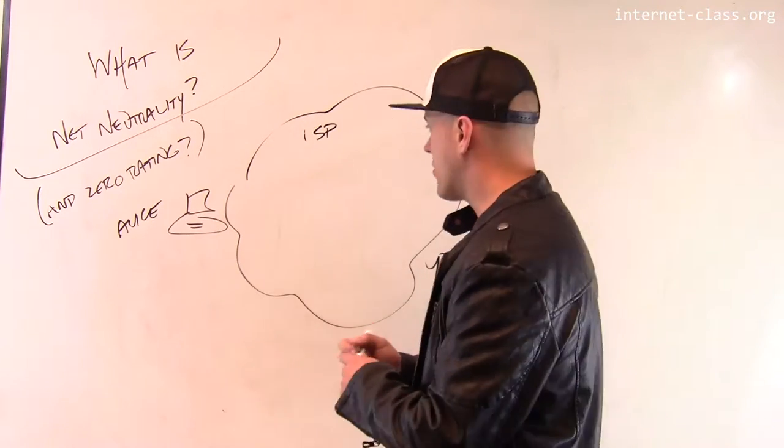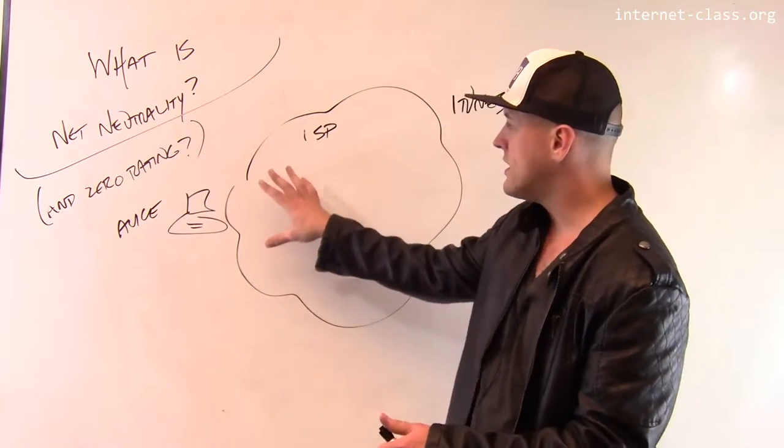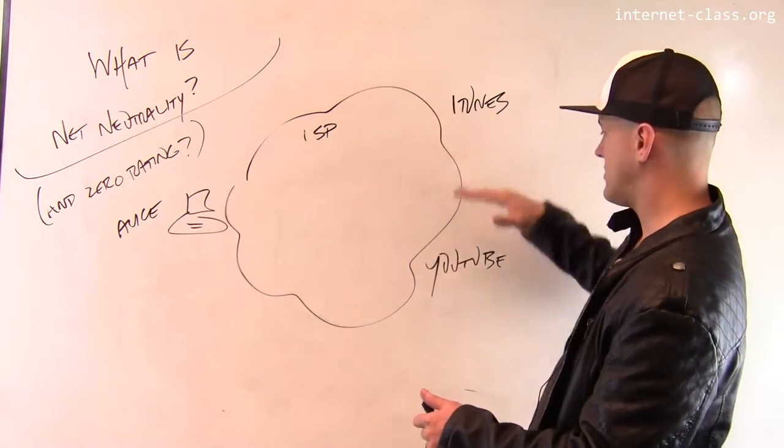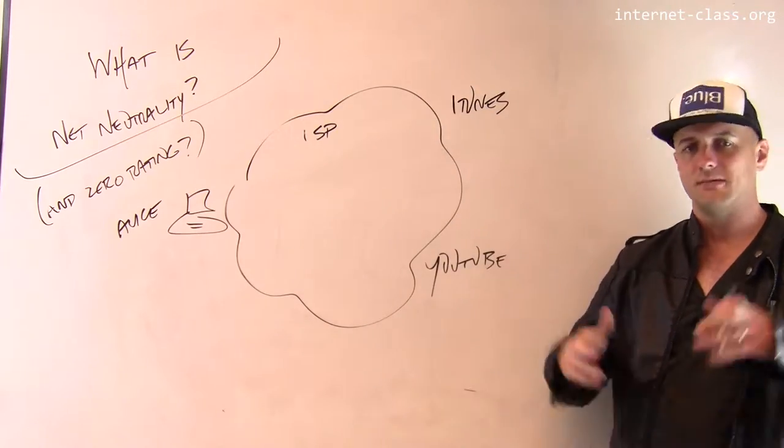Now, what should normally happen is if she starts to download the movie, her ISP should allow the bandwidth to iTunes and YouTube to be whatever it's going to be. And maybe one of the sites is faster in general, but maybe not.